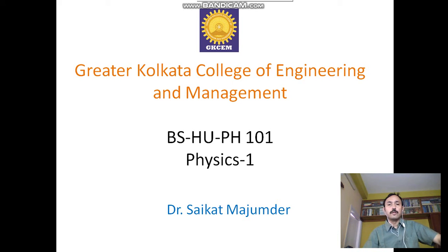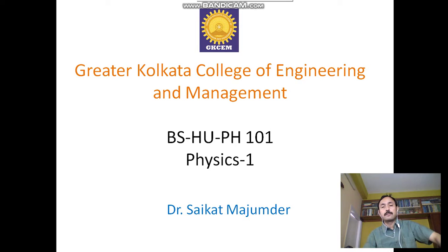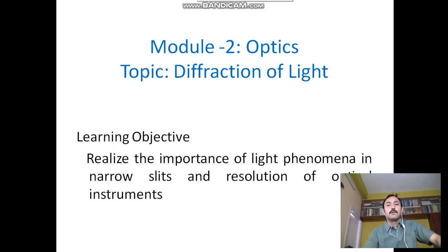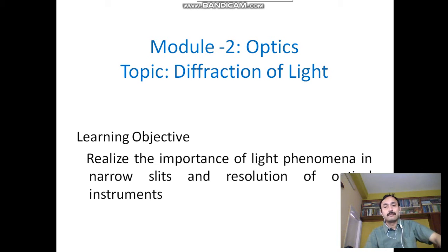Hi, this is Soikot Mahindar. Our topic today is diffraction. Last topic we discussed about interference. This is under the basic science and humanities course, paper code PH101, course name Physics 1. This is under module 2 of Optics. The learning objective is to realize the importance of light phenomena in narrow slits and resolution of optical instruments.